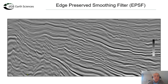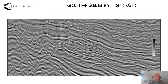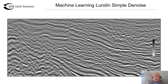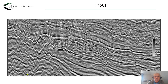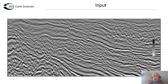Back to the input. Now we go to the edge preserved smoother — this gives you really razor sharp edges, as you can see. Compared back to the input. This is an application of the recursive Gaussian filter: not really edge preserving, but a very fast smoothing application. Back to the input. Then application of the machine learning simple denoise — a simple noise removal trained machine learning model. Back to the input. And finally the application of AJAX, which also removes random noise, but also changes the amplitude spectrum a little bit.